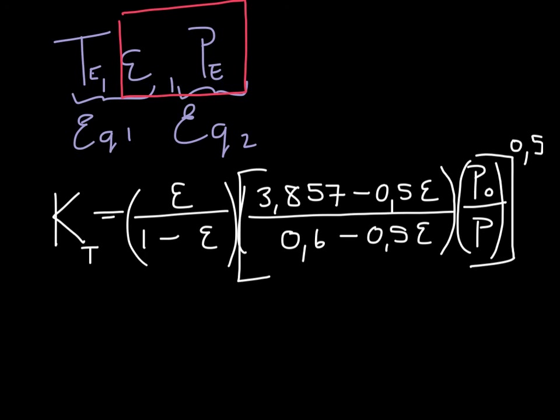Using our first trial values for epsilon and pressure we can now calculate the equilibrium constant that we are supposed to have in our reactor.